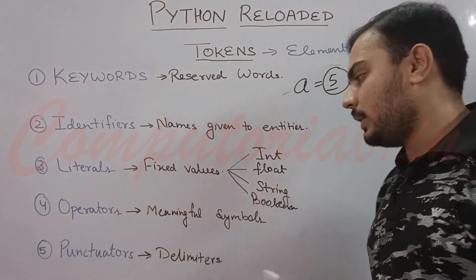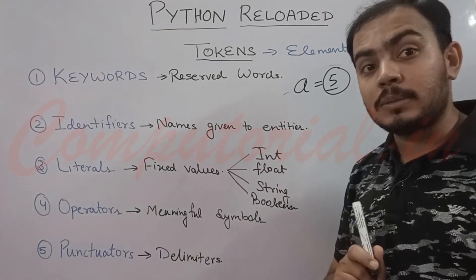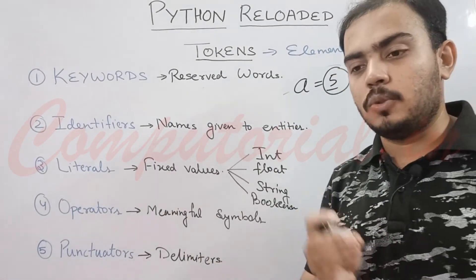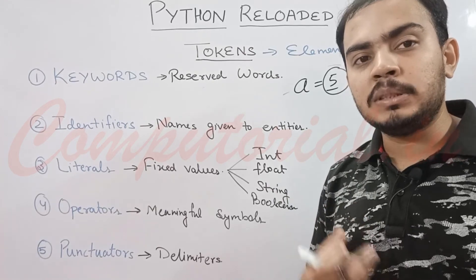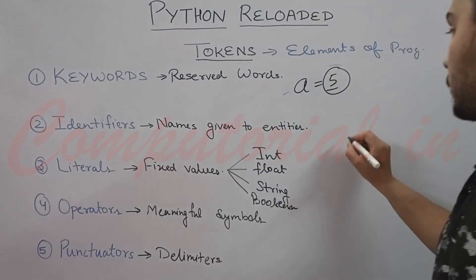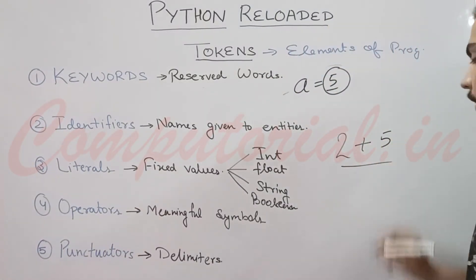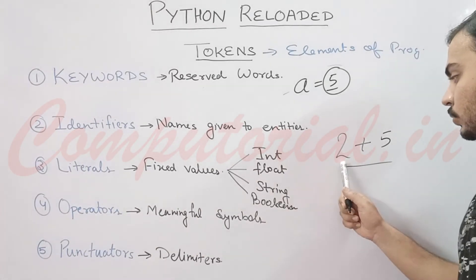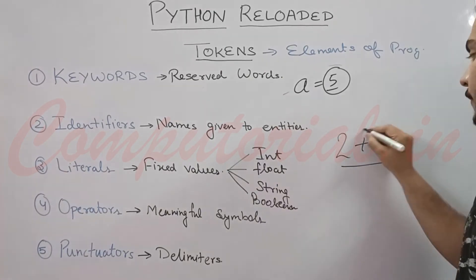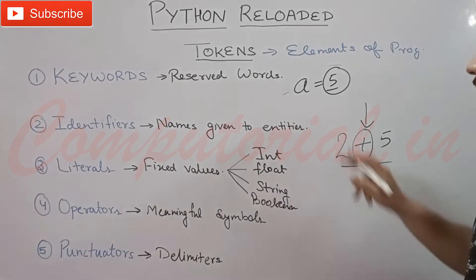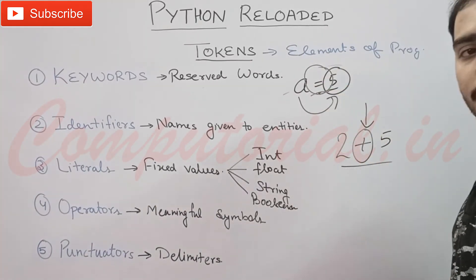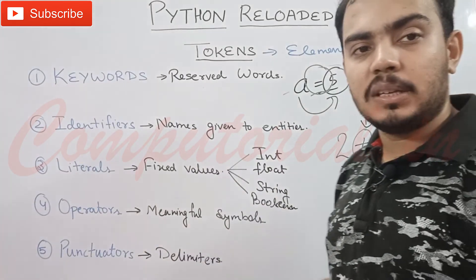Next we have operators. Operators are meaningful symbols. When you put these symbols in your Python code, they make changes in your program. For example, if you write 2 + 5, the plus symbol means you want to add 2 and 5 — so this plus is an operator. Similarly, if you write a = 5, the equals sign is also an operator. We have many types of operators available in Python.